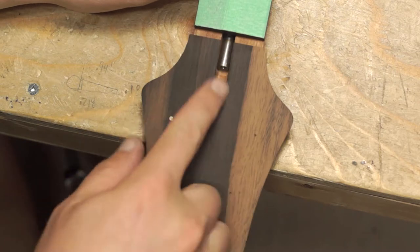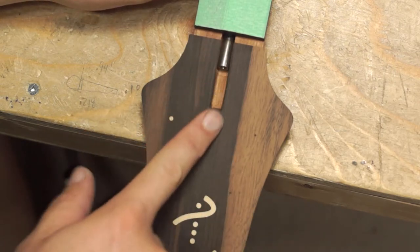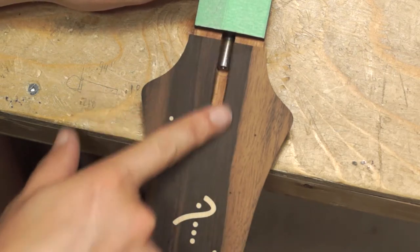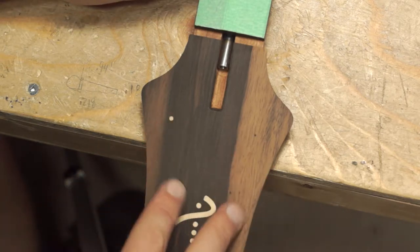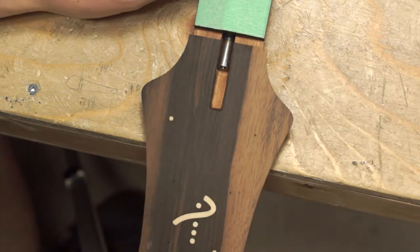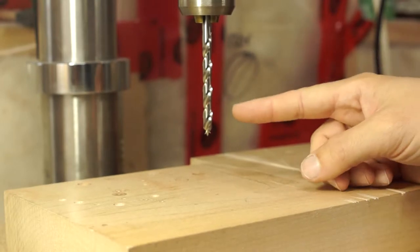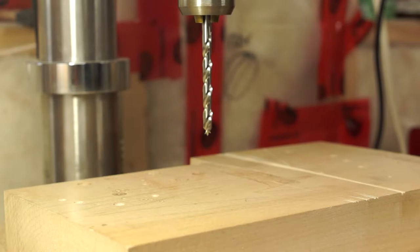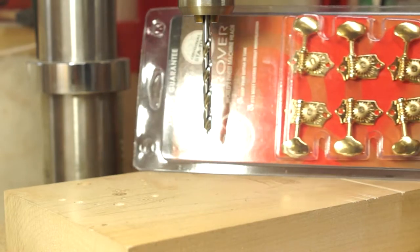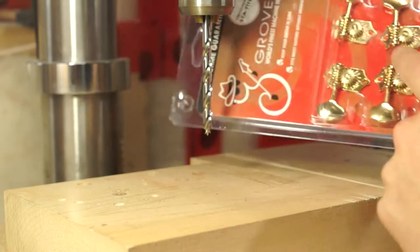So now that the truss rod channel here has been completely cut out and just roughly sanded, the next step that I'm going to do is drill the tuner holes for the tuners. So 17/64th drill bit chucked in the drill press here and I'm going to be using these Grover open back tuners for this guitar because they're super lightweight.